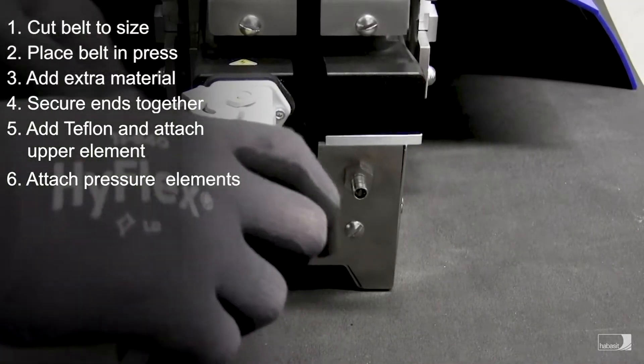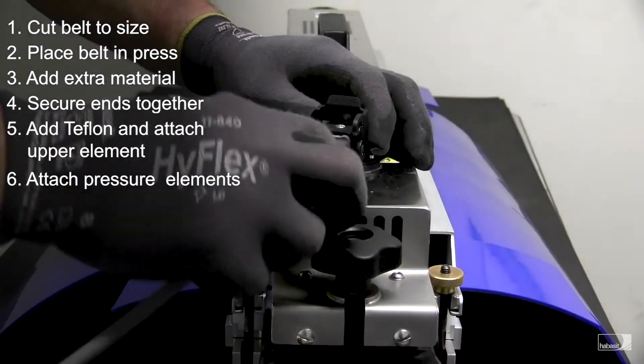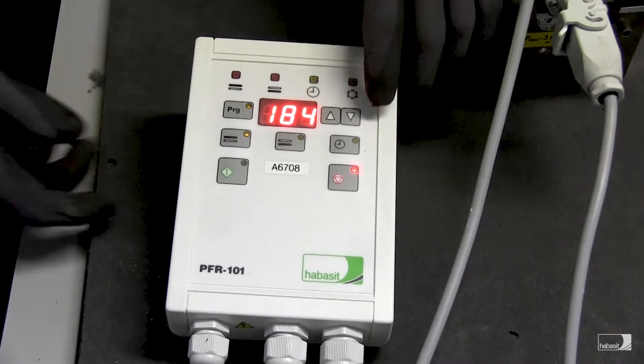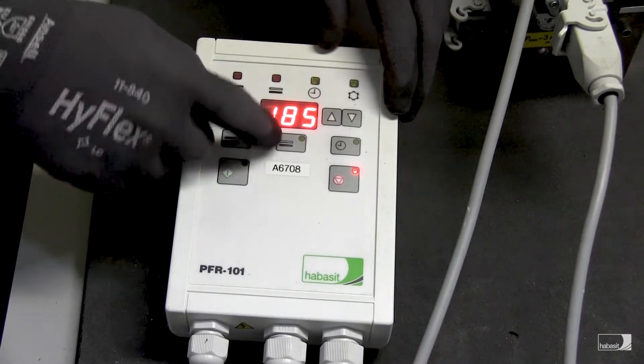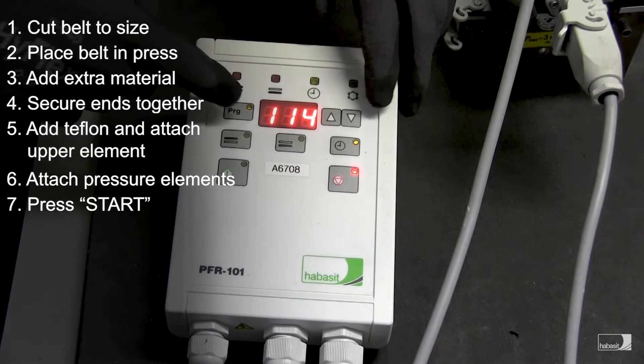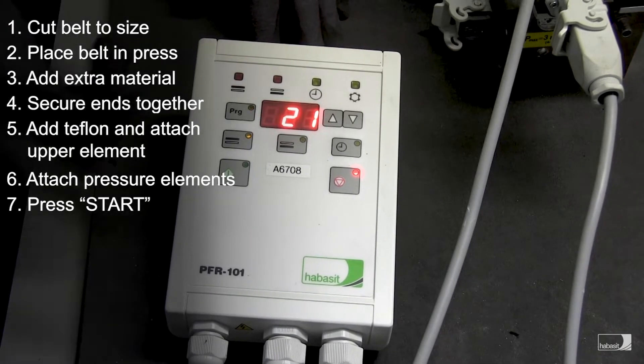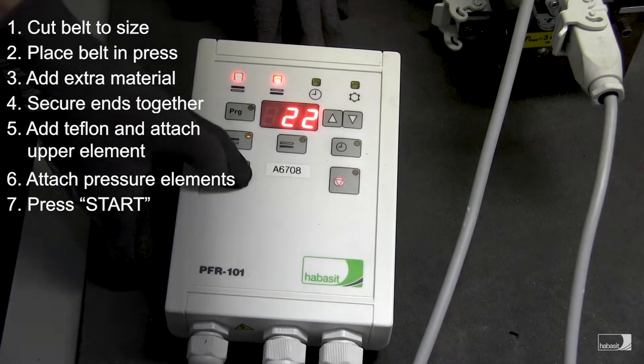Set the upper and lower platen control to the desired temperature settings and time on Habesit's PFR 101 regulator. Press the start button and allow the press to cycle through the process.